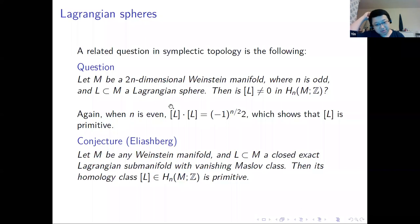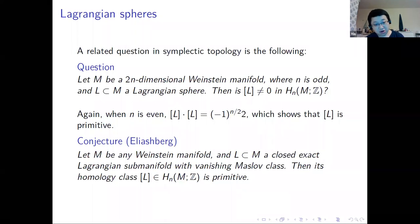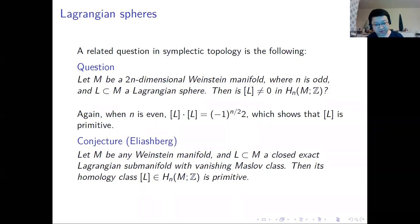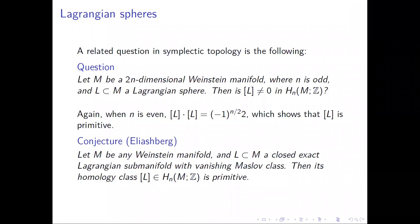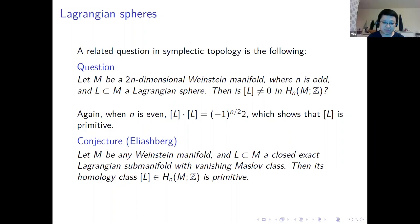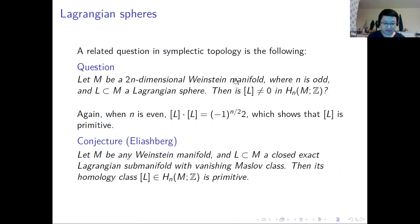There is a related question in symplectic topology: if you take a 2n-dimensional Weinstein manifold with n odd and have a Lagrangian sphere in this manifold, is it true that this Lagrangian sphere has a non-zero homology class with Z-coefficients? If n is even, the self-intersection number, computed via the Euler form, shows the homology class is not only non-zero but also primitive.